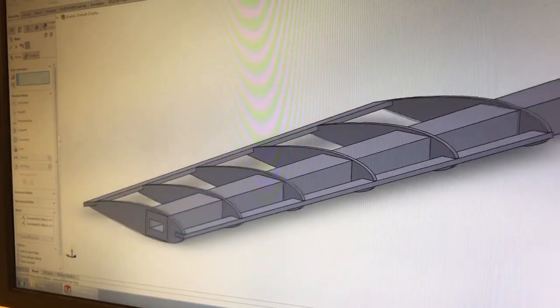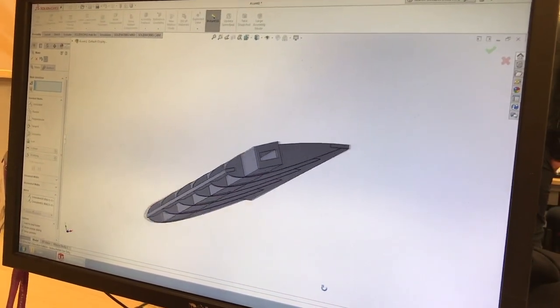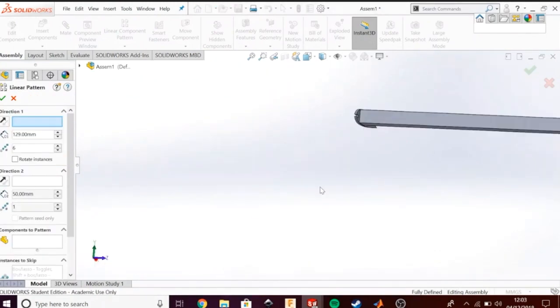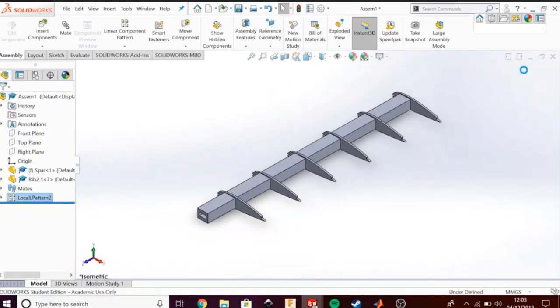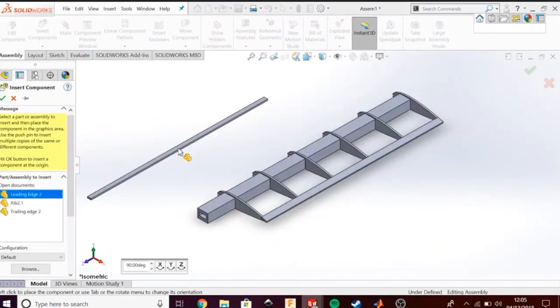Next, different parts of the wing required for an overall assembly were designed using SOLIDWORKS – spa, rib, trailing edge and leading edge.